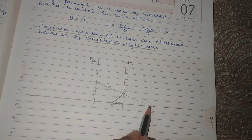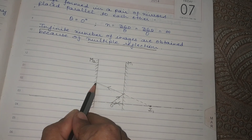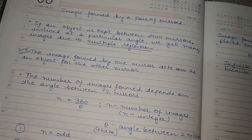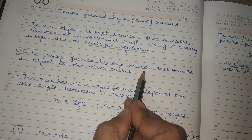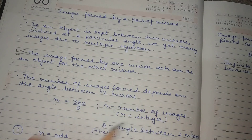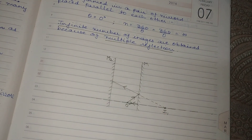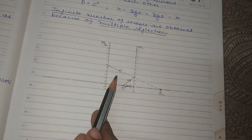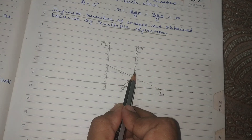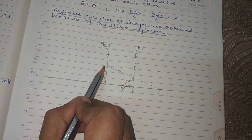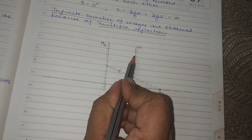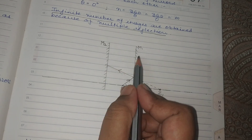So M2 thinks I1 is the point from where the rays are coming — for M2, I1 is the object. It is not a real object, but for M2 it appears to be the object. The image formed by one mirror acts as the object for the other mirror — this always happens when you have more than one mirror causing multiple reflection.